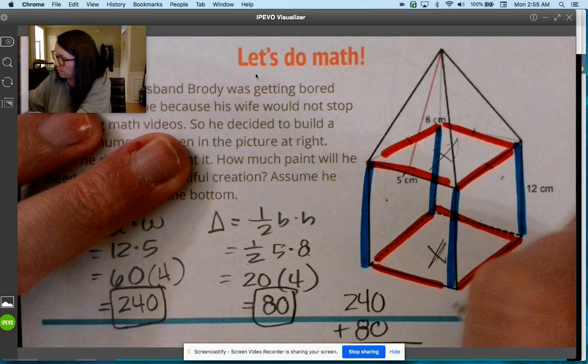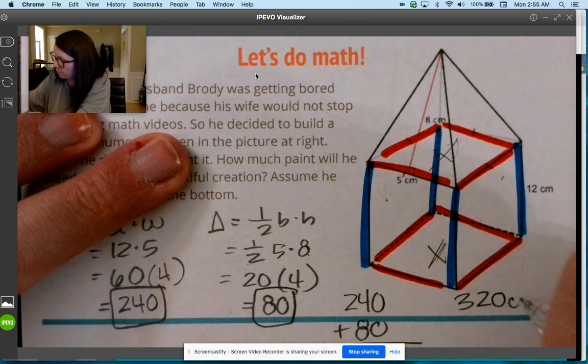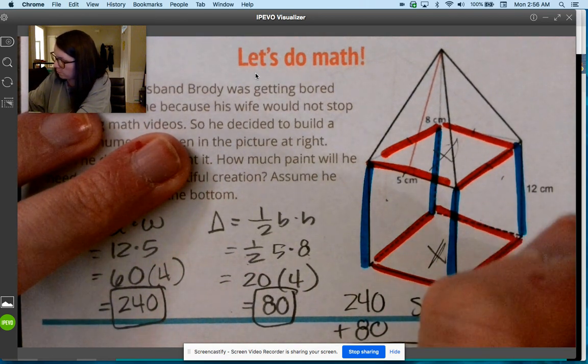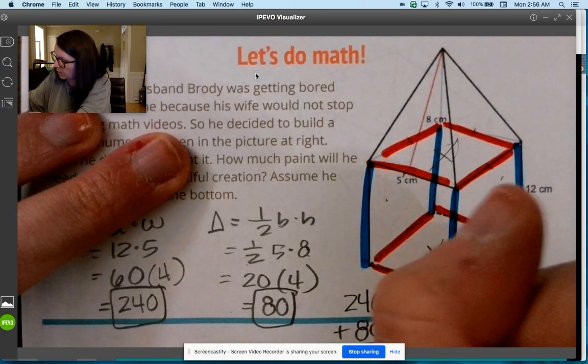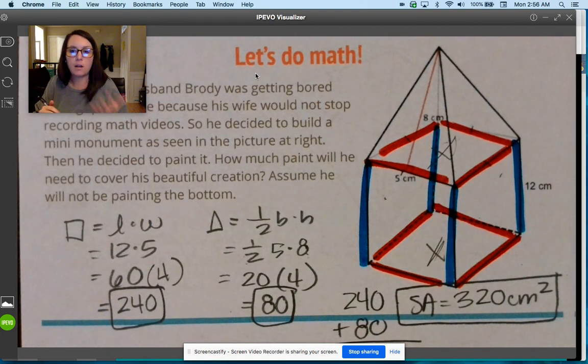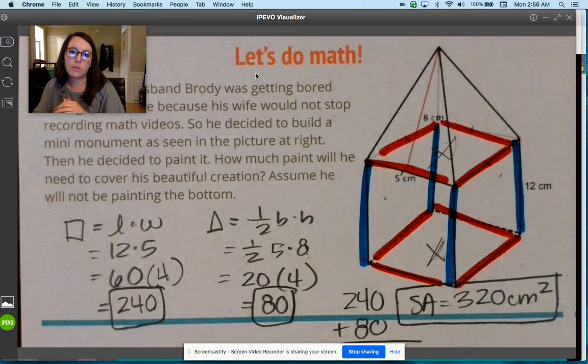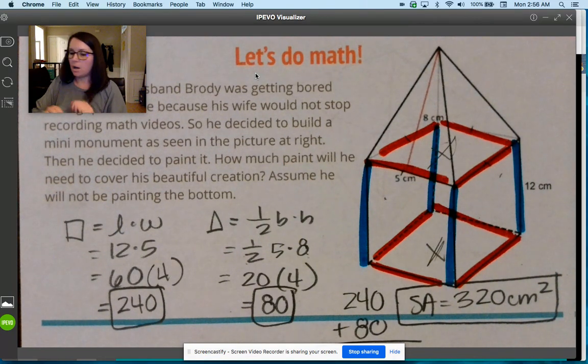We're going to add those together: 320. So to cover the whole outside, not covering the bottom, would be 320 centimeters squared.